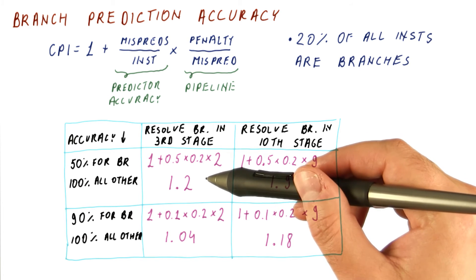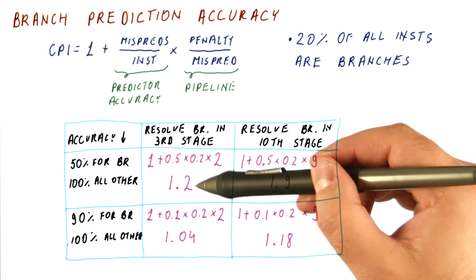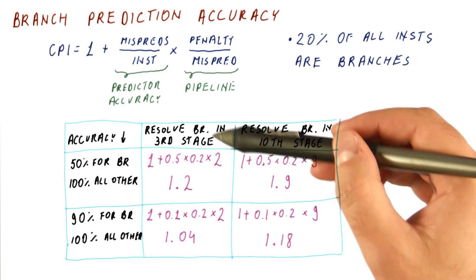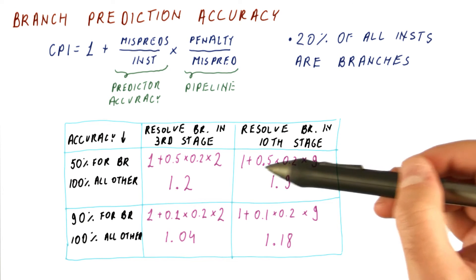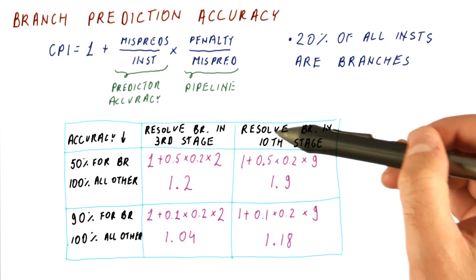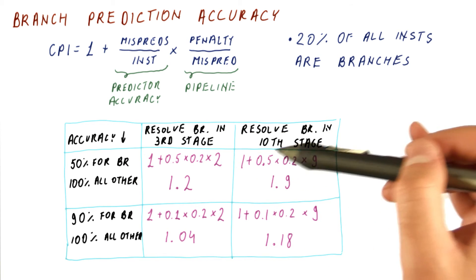What we can conclude from this is that a better branch predictor will help us regardless of whether we have a shallow or a deep pipeline. But the amount of help from a better predictor changes depending on how deep the pipeline is.